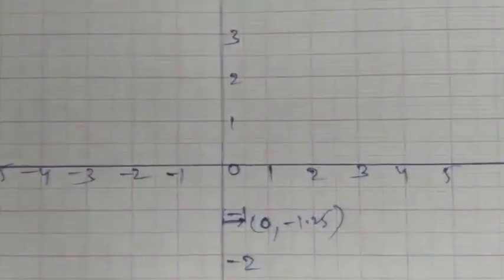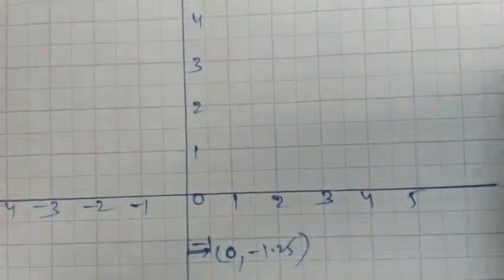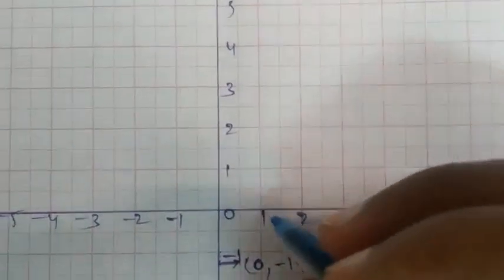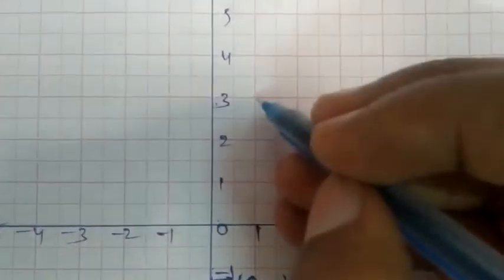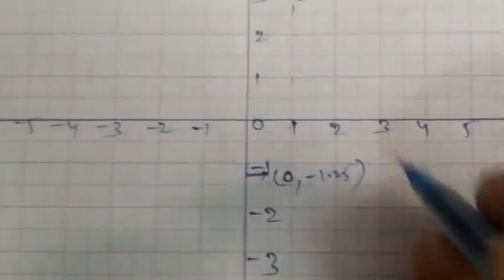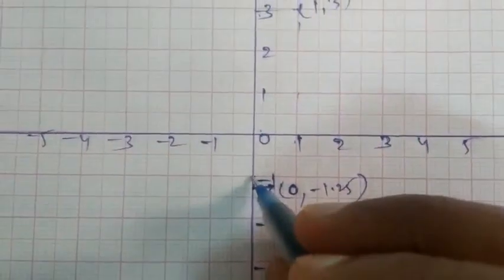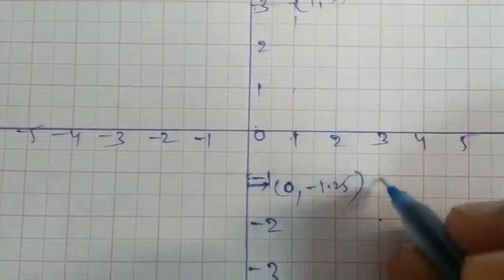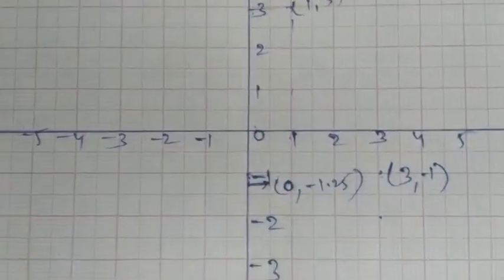The next point is 1 comma 3. Take 1 unit on the x-axis and 3 units on the y-axis and plot accordingly. Finally, for 3 comma minus 1: take 3 units on the x-axis and minus 1 on the y-axis. Join these perpendicular distances — they meet at the point representing 3 comma minus 1. This completes the answer.